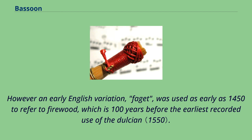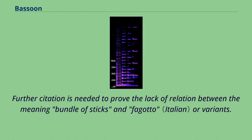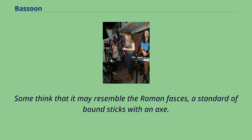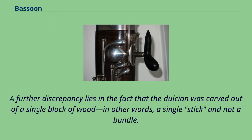In early English variation, faggot was used as early as 1450 to refer to firewood, which is 100 years before the earliest recorded use of the dulcian. Further citation is needed to prove the lack of relation between the meaning bundle of sticks and fagotto or variants. Some think that it may resemble the Roman fasces, a standard of bound sticks with an axe. A further discrepancy lies in the fact that the dulcian was carved out of a single block of wood — in other words, a single stick and not a bundle.